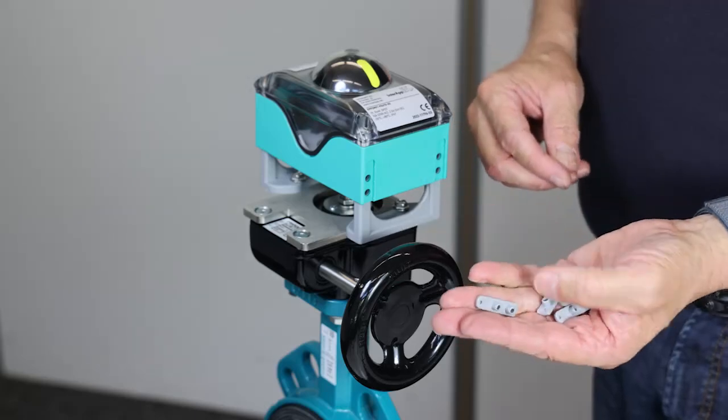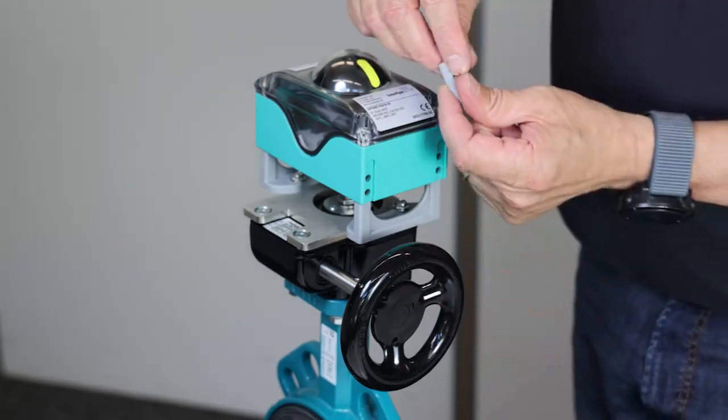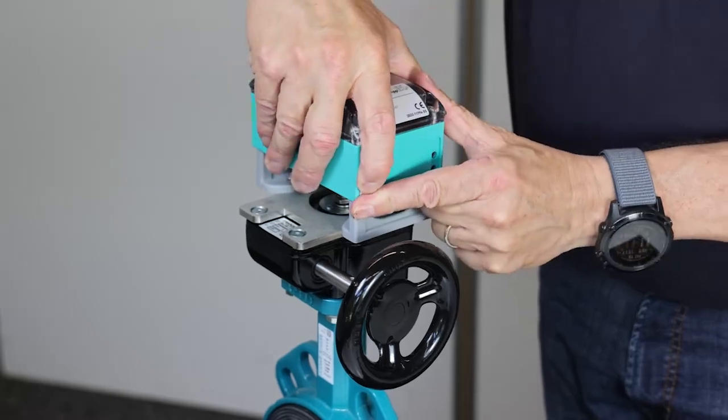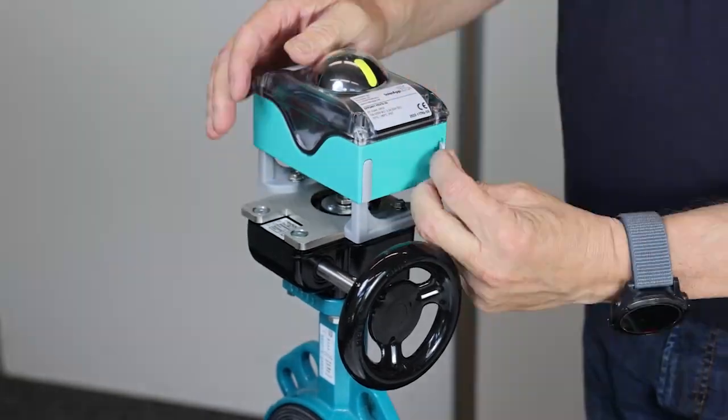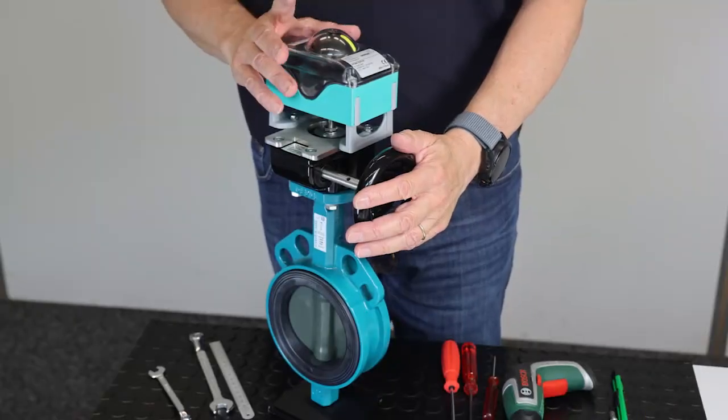Now using the four fixation plates we secure the limit switch box on the legs. Now the mounting is finished.